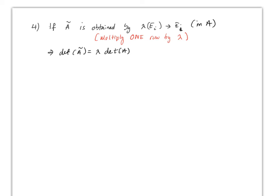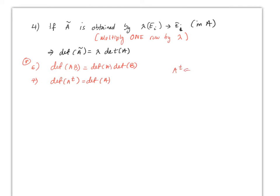Property 6 is very important: det(A·B) equals det(A) times det(B). This is used in many proofs. Property 7: det(A^T) equals det(A). In other words, transposing a matrix — switching rows for columns — does not change its determinant.